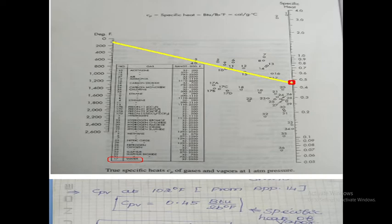You should mark 0.17 in this graph. First, connect the temperature 102 degrees Fahrenheit point and 0.17. Then extend the line up to the specific heat scale on the right side. Read the specific heat of vapor from this graph at the right side specific heat scale. From this graph, specific heat of vapor at 102 degrees Fahrenheit is equal to 0.45 BTU per pound degree Fahrenheit.